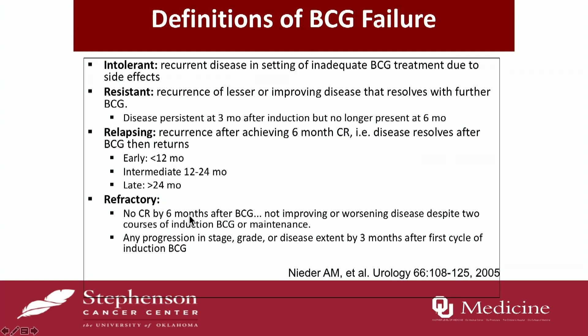The last category is refractory, meaning there is still persistent disease at that six-month time period. Additionally, as Dr. Lerner mentioned, if a patient has high-grade T1 after induction BCG and still has high-grade T1 at the three-month mark after the first induction, that is also considered refractory.